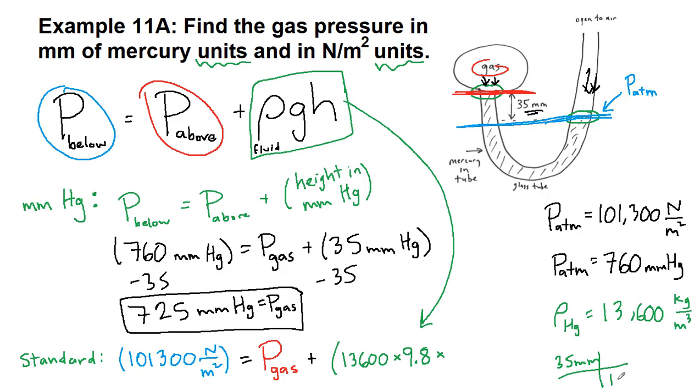And the height would have to be in units of meters. So 35 millimeters, milli, 1 millimeter, means 10 to the minus 3 meters. And so we get 0.035 meters. So we put that in 0.035 meters.